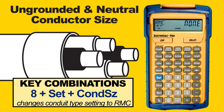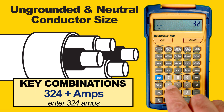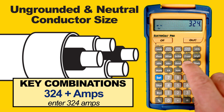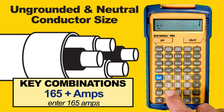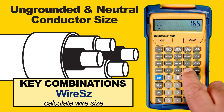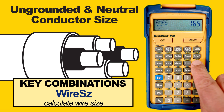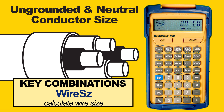Now we just need to re-enter the ungrounded feeder ampacity that we calculated previously as 324 amps. We enter 324, press Amps, then press Wire Size. We get 400 AWG copper wire size. The final step is to enter the neutral conductor ampacity, which we calculated at 165 amps. We enter 165, press Amps, then press Wire Size, and we get the 2-0 wire size, as the book does.